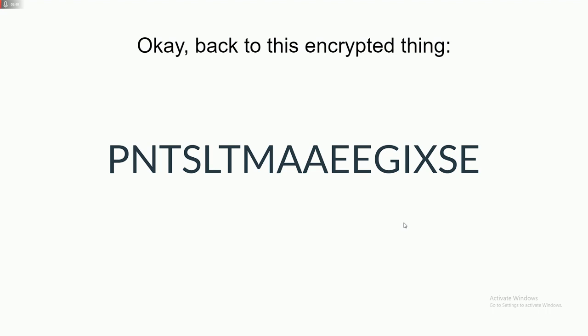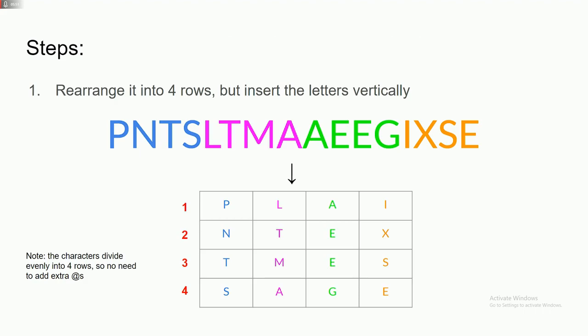So let's go back to our original encrypted thing that came from the modules, plain text message, except this is encrypted. So if you want to decrypt it, we arrange it into four rows. I have it nice and color-coded here.